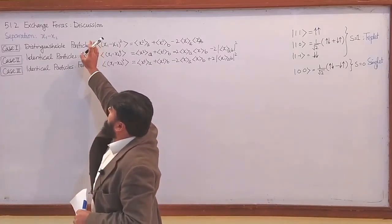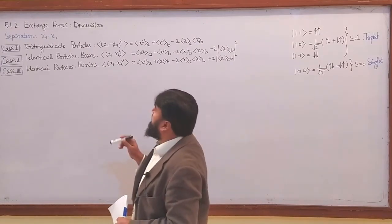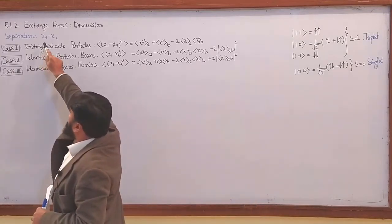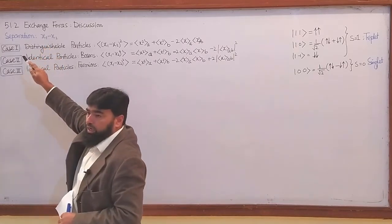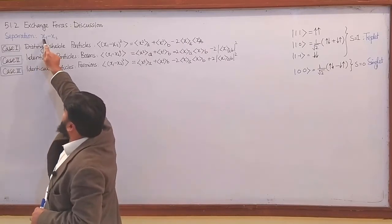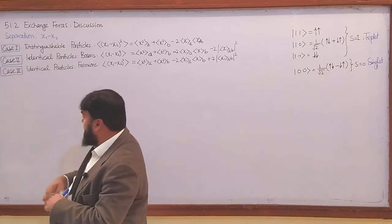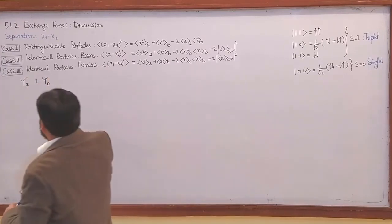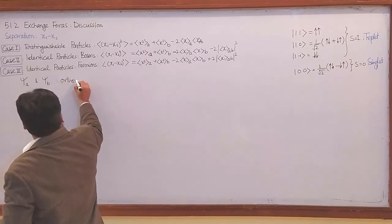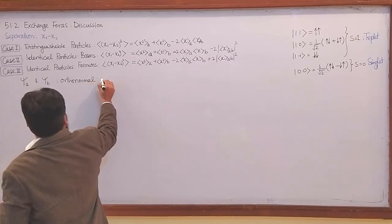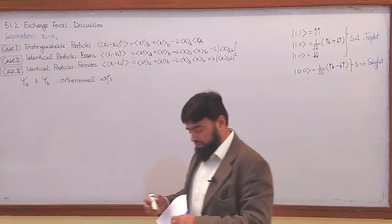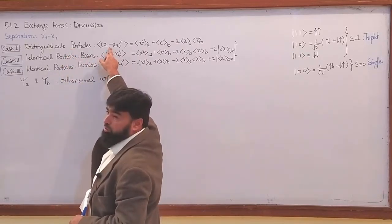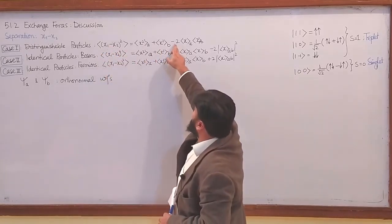In the previous lecture, we discussed the exchange forces, and today we will discuss the reality behind the exchange forces. We discuss the separation of a two-particle system. If the particles are distinguishable particles, we were having two states, psi_a and psi_b, which are the normal wave functions — the normal states. When the particles were distinguishable and we were studying their separation, the expectation value of the square of their separation, we came to this result.